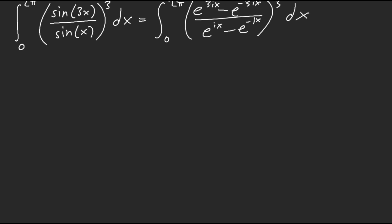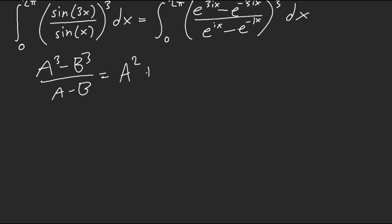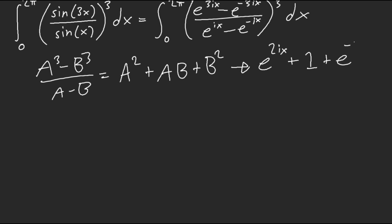So we're going to complexify the integral again, from 0 to 2π. We have (e^(3ix) - e^(-3ix)) / (e^(ix) - e^(-ix)), all cubed. We can write a reference to avoid small mistakes. And we know that this simplifies — e^(ix) times e^(-ix) gives us e^(2ix) + 1 + e^(-2ix). So now we have (2cos(2x) + 1) cubed. Be very careful — this is cubed.